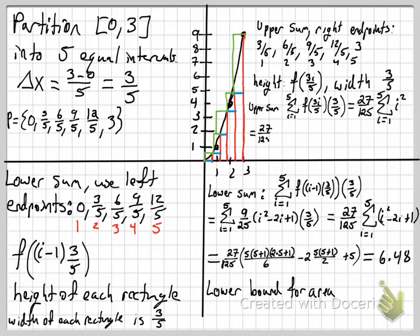The sum runs from 1 to 5: heights times widths, adding up the areas of those rectangles. We get 27 over 125, and this time we only have i squared — a bit simpler. Using the i squared formula n(n+1)(2n+1)/6, throwing that into the calculator gives 11.88, which is our upper bound for the area.